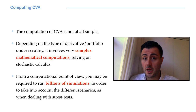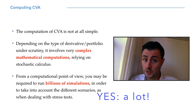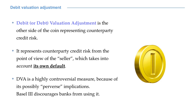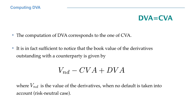The computation of CVA is not at all simple. It involves cumbersome mathematical formulas and a lot of computer simulations — billions of simulations. Debit valuation adjustment, DVA, is the other side of the coin representing counterparty credit risk. It represents counterparty credit risk from the point of view of the seller, which takes into account its own default and the impact of this on the value of the transaction. DVA is a highly controversial measure and regulators are very suspicious about its use by banks.